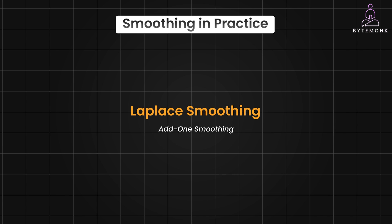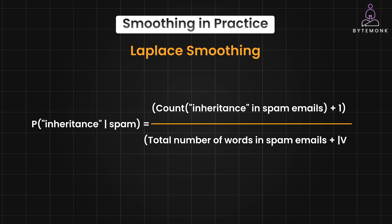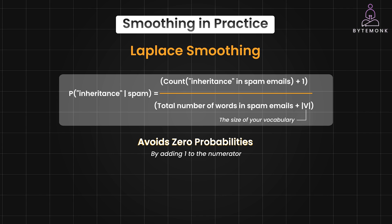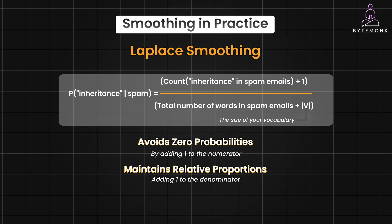It prevents the probabilities from being zero. For example, in the case of the probability of the word 'inheritance' given an email is spam, Laplace smoothing modifies the calculation as follows. It adds one in the numerator, and V is the size of the vocabulary — that is, the total number of words you consider. By adding one to the numerator, we ensure that even if a word hasn't been seen in the spam emails, it won't have a zero probability. Instead, it will have a small positive probability, reflecting the possibility that it could appear in future spam. Adding one to the denominator compensates for the added one in the numerator, ensuring that the probabilities still add up to one — a requirement for a probability distribution — but they are slightly adjusted downwards to account for the smoothing.